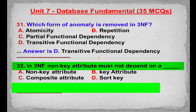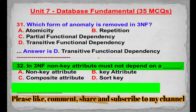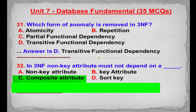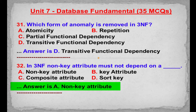MCQ number 32: In 3NF, a non-key attribute must not depend on a. Option A: Non-key attribute. Option B: Key attribute. Option C: Composite attribute. Option D: Sort key. Correct answer is Option A: Non-key attribute.